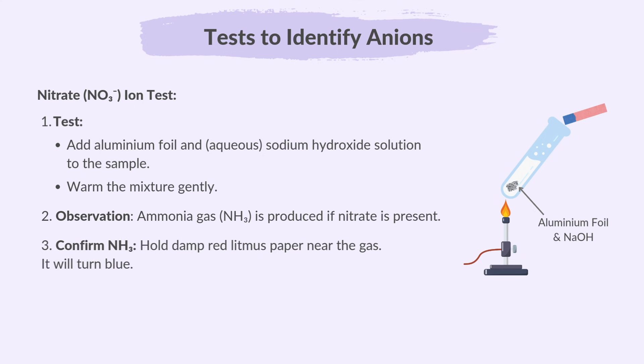To confirm that it is ammonia gas, hold damp red litmus paper near the gas. It will turn blue if it's ammonia.